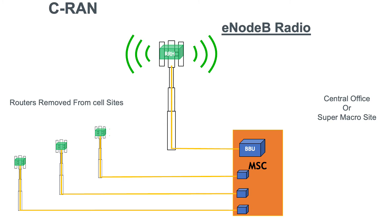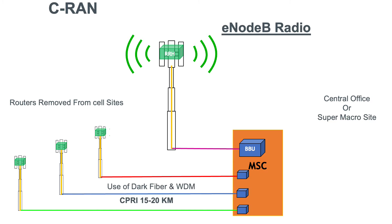Of course, we'll have to provide connectivity from the BBU to each one of those eNodeBs, and that will be achieved again using a CPRI interface, but this time we'll be using dark fiber and will extend the range of the CPRI interface up to 15 or even possibly 20 kilometers.